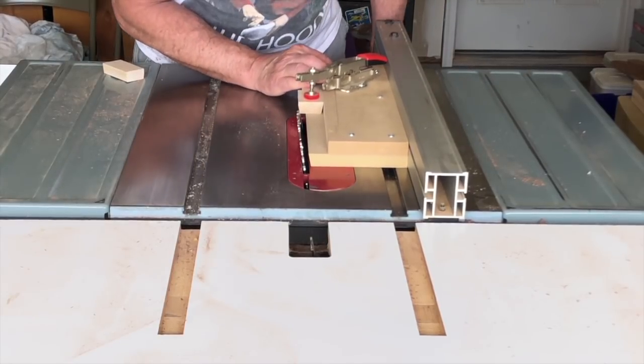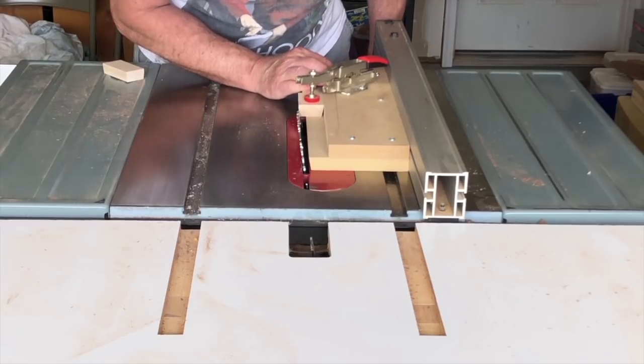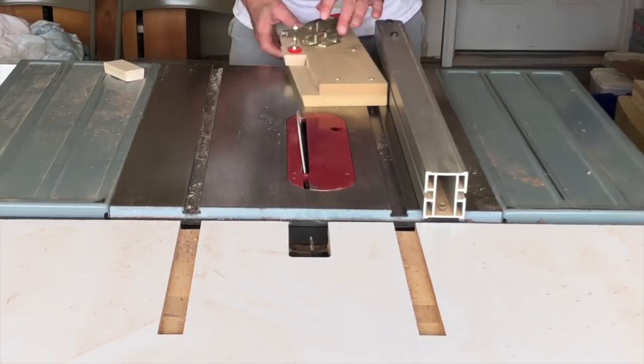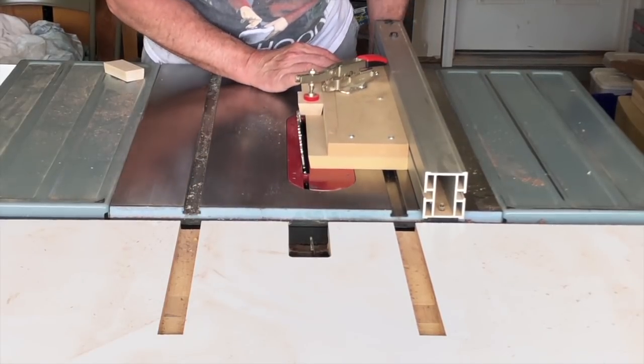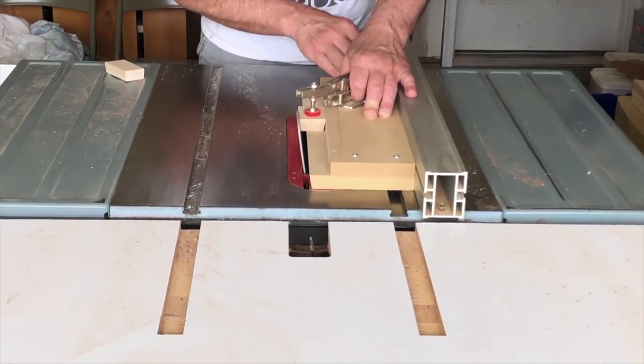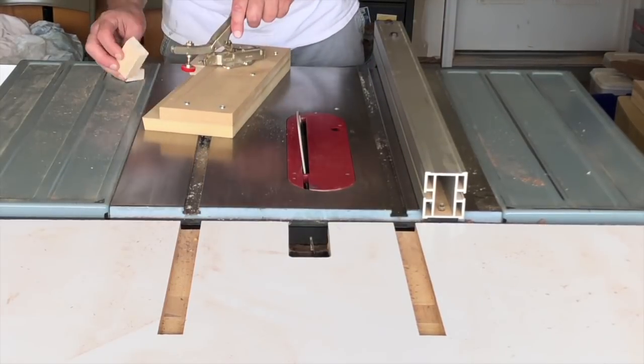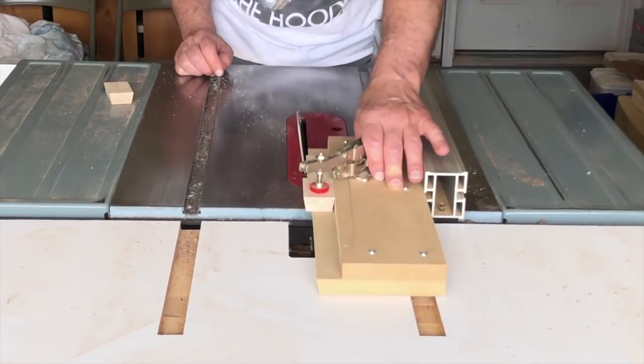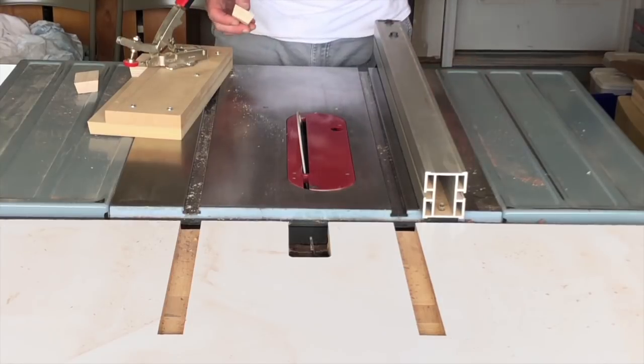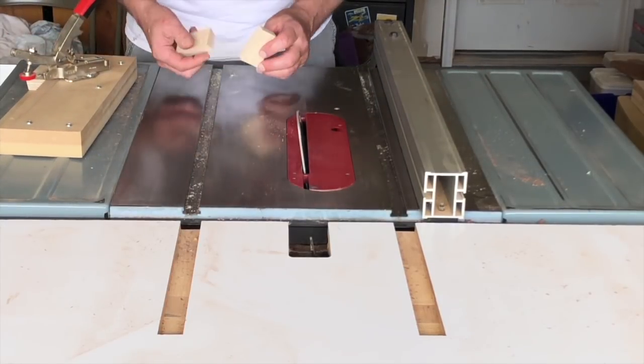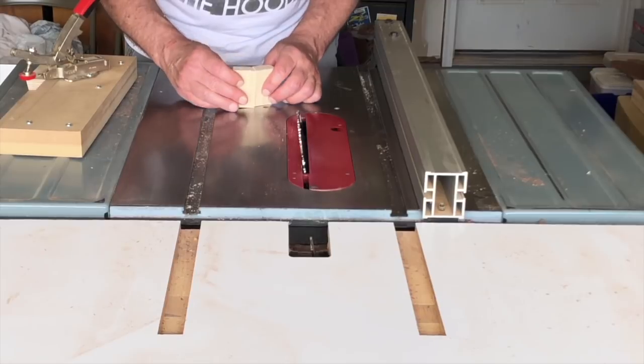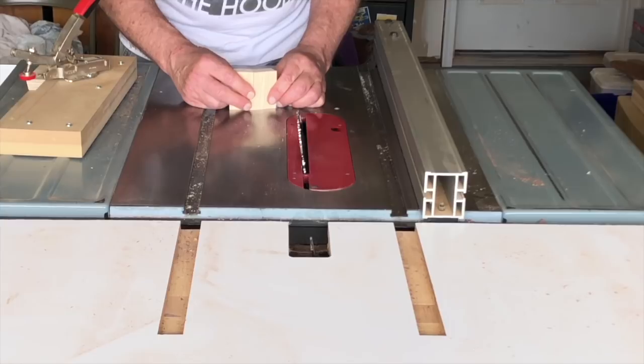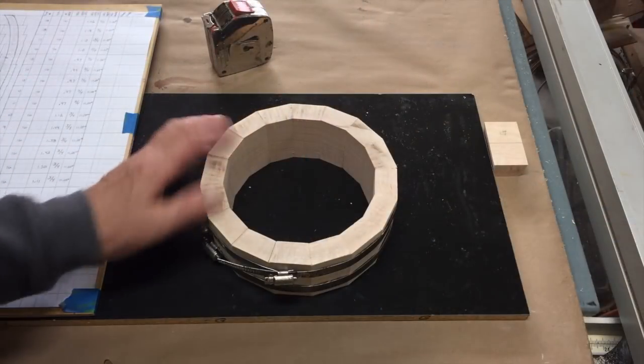The blade is set at 11 and a quarter degrees. That's really the key thing for cutting a segment this way - making sure the blade is exactly at the angle you need. I cut the angle on one side on all the pieces and then turn them around and cut the angle on the other side. I just kind of snuck up on it until I got the proper segment width.